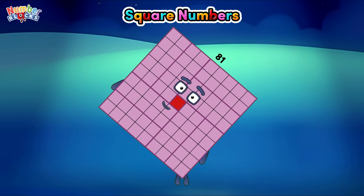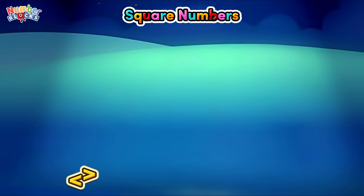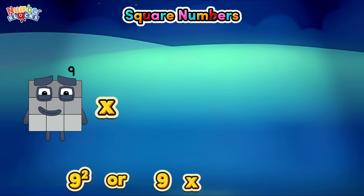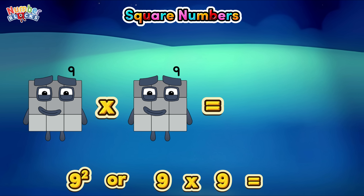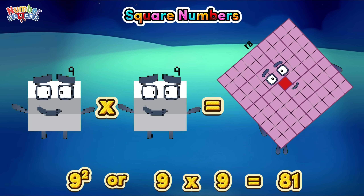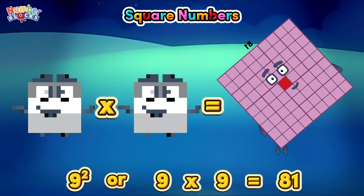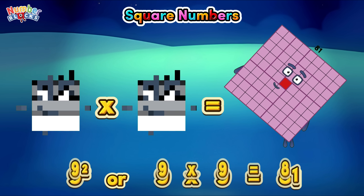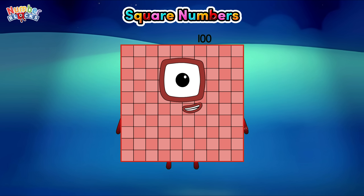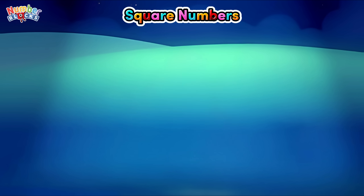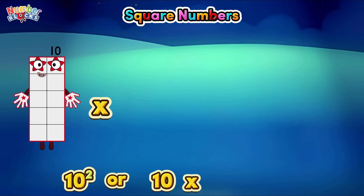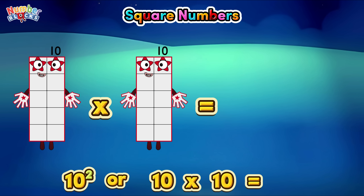Eighty-one. Nine square, or nine times nine, is equals to eighty-one. One hundred. Ten square, or ten times ten, is equals to one hundred.